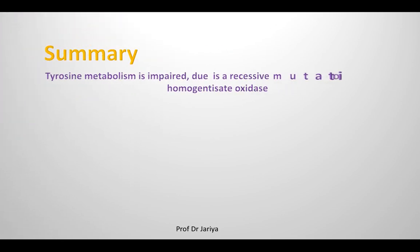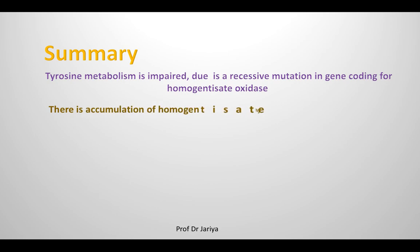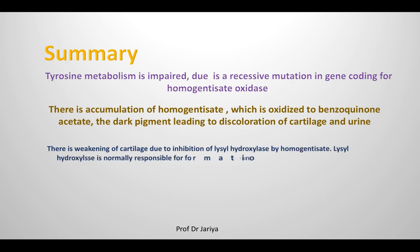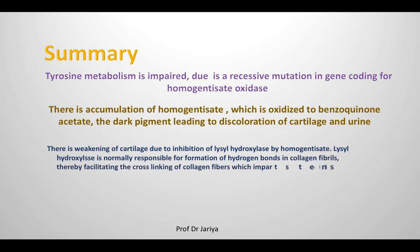To summarize: the metabolism of tyrosine is impaired due to a recessive mutation in the gene for homogentisate oxidase. Homogentisate accumulates and is oxidized to benzoquinone acetate, which leads to discoloration of cartilage and urine. There is also inhibition of lysyl hydroxylase by excess homogentisate; lysyl hydroxylase is normally responsible for hydrogen bonds and cross-linking of collagen, which imparts tensile strength to the collagen.